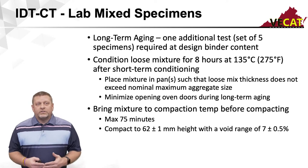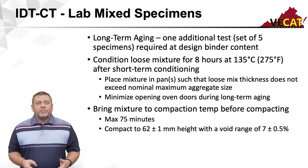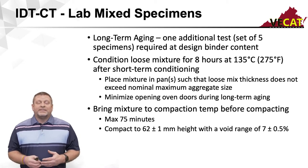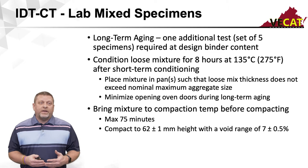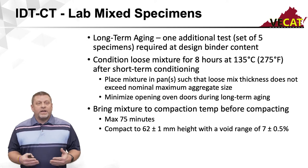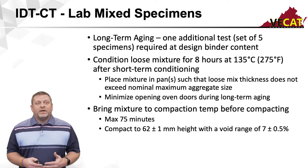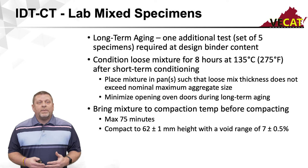We mentioned earlier there's one set of pills for the IDT-CT crack test that need to be long-term aged. Just like the short-term aged pills, it takes a minimum of five specimens to obtain one average CT index value for your long-term aged specimens. These five specimens must be done at your design binder content.